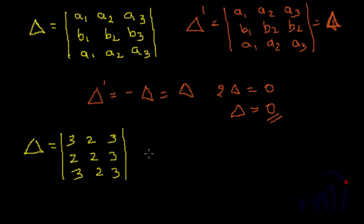Let us validate using a numerical example. Let us take this determinant where row 1 and row 3 are same and expand it and see if we get a 0. That will be the ultimate proof.